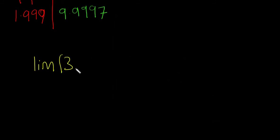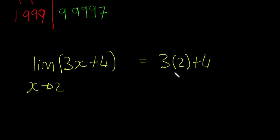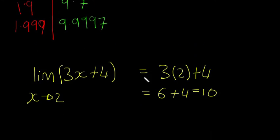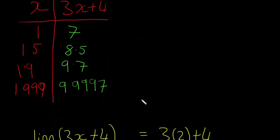The limit of 3x plus 4 as x approaches 2. You just have to substitute in 2 for x. That's going to be equal to 6 plus 4, which is equal to 10. So we were right. 10 is the limit. That's the important bit there, really, just to know how to do that. That's good to know to understand what you're actually talking about.